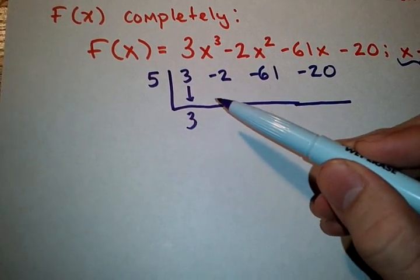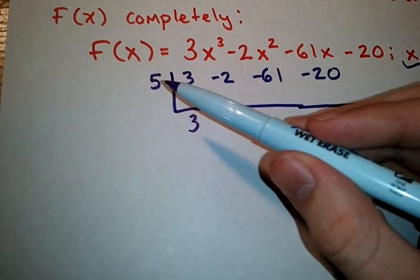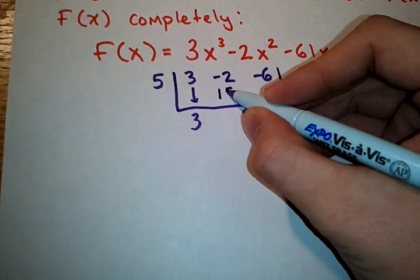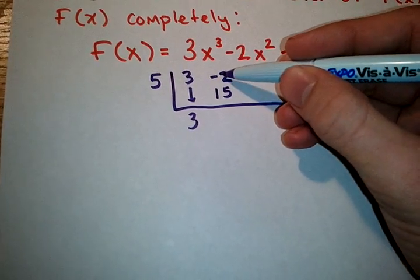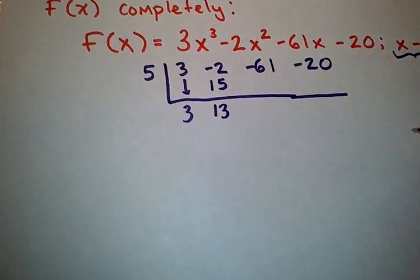Now, as we go diagonally, we're going to multiply 3 times the 5. And that gives us 15. On the columns, again, we're going to add negative 2 plus 15. That gives us 13.